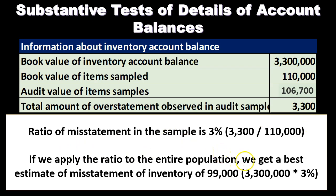The ratio of misstatement in the sample is three percent, because we take the $3,300 and divide it by the book value of the items selected, which is $110,000. So to recap: total population is $3,300,000; book value of the sample is $110,000; our audit value is $106,700; the difference is $3,300. We compare that $3,300 to the book value of the sample — not the total population — giving us the 3% ratio of misstatement in the sample. If we apply this ratio to the entire population, we get a best estimate of misstatement in inventory of $99,000.